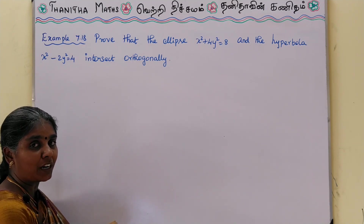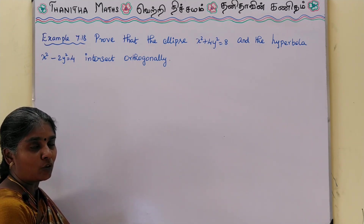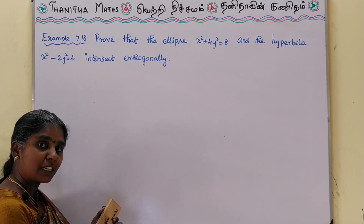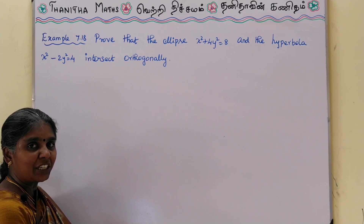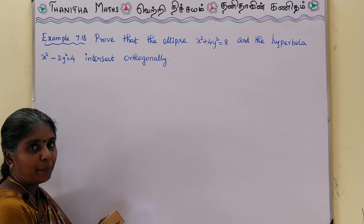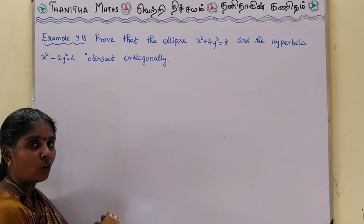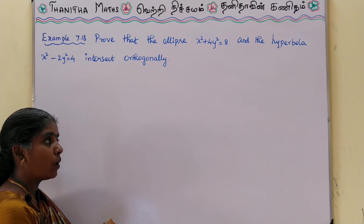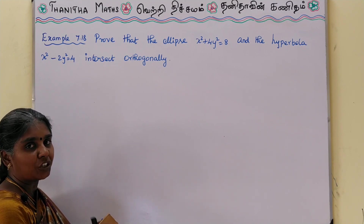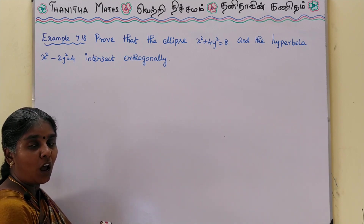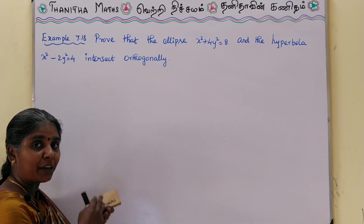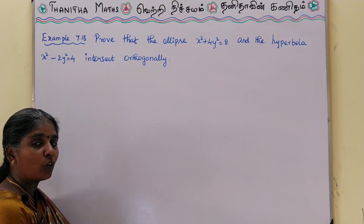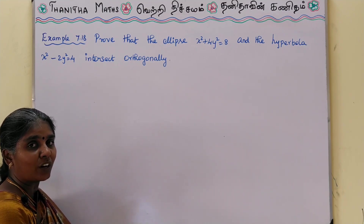How does it intersect? Orthogonal intersect — we are trying to prove that. What is the condition for orthogonal intersection? The condition is m1 × m2 = -1. He has that condition and we can substitute it. M1 into M2 will equal minus 1. When we say orthogonal intersect, we prove that the product of slopes m1 × m2 equals minus 1.